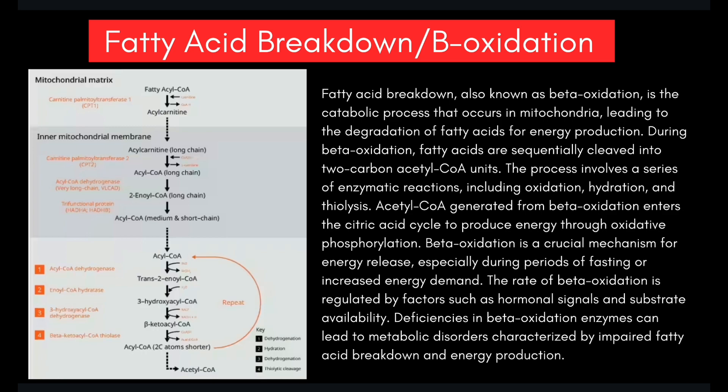Beta oxidation takes place in the mitochondria of cells, in contrast to fatty acid synthesis, which occurs in the cytoplasm. The main substrates are fatty acids, typically long-chain fatty acids, which are broken down into acetyl-CoA units. Beta oxidation involves four key enzymatic steps: oxidation, hydration, oxidation, and thiolysis. These steps are repeated for each two-carbon unit in the fatty acid chain.